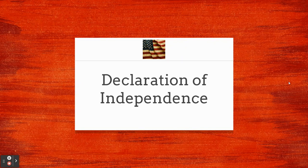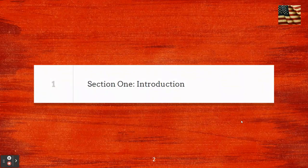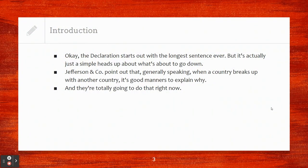The Declaration of Independence — that moment we declared we no longer wanted to be attached to Britain. We wrote a real fancy document that also kind of resembles a breakup letter with King George III. Section one, the introduction. The Declaration starts out with the longest sentence ever, but it's actually just a simple heads up about what's going to go down. Jefferson and company point out that generally speaking, when a country breaks up with another country, it's good manners to explain why.